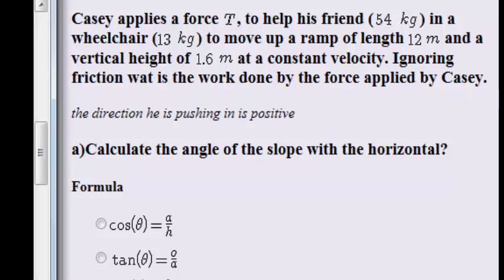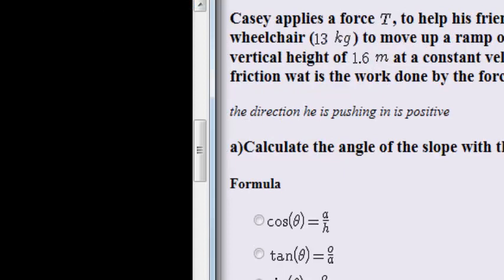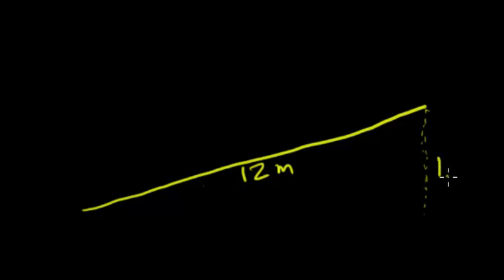Let's see. If we have our ramp, the ramp is making an angle. We don't know the angle, but what we do know is the length of the ramp is 12 meters, and we also know that the height of the ramp is 1.6 meters.